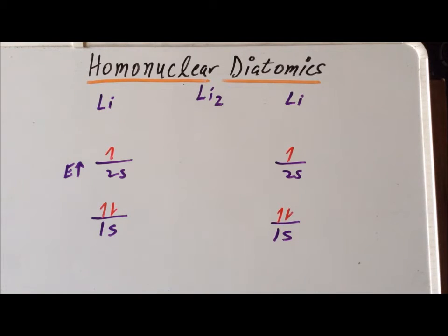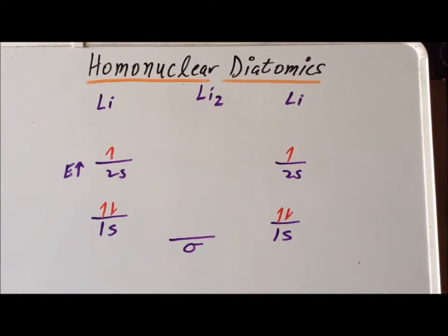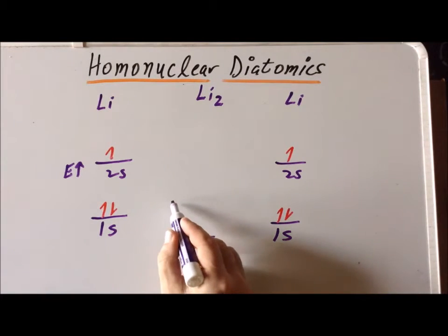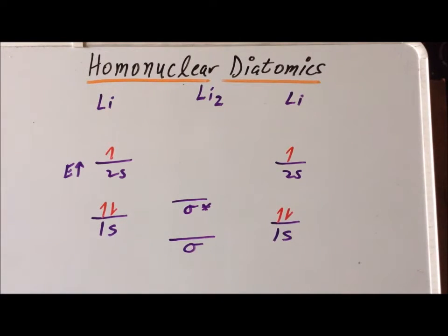We know that there's an interaction between 1s orbitals, especially if they have the same or similar energies, to form a lower energy bonding combination called a sigma orbital, and a higher energy antibonding combination called sigma star.